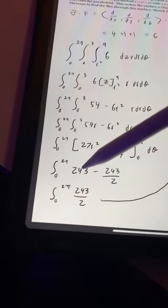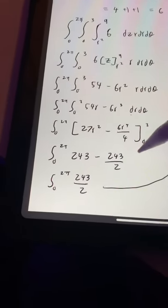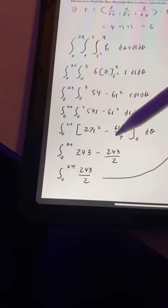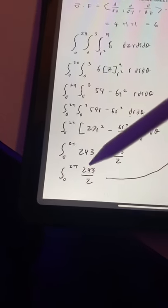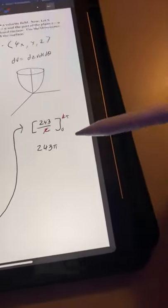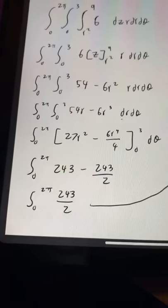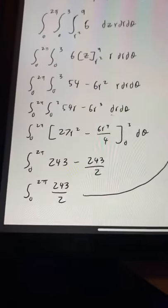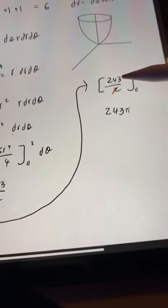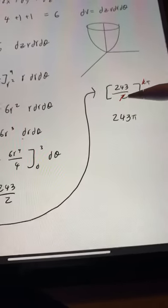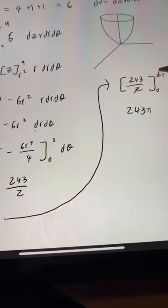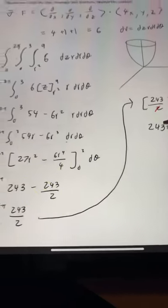And from that, I got 243 minus 243 over 2. And then I combined it, which made 243 over 2. So then I took the integral from 0 to 2π of 243 over 2, which is just 243π, because the 2s cancel out. Thank you.